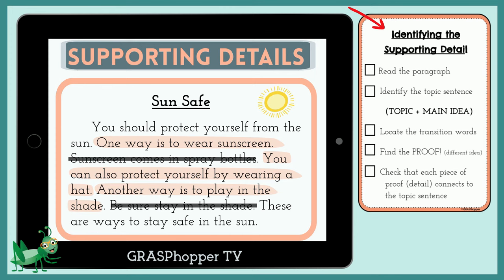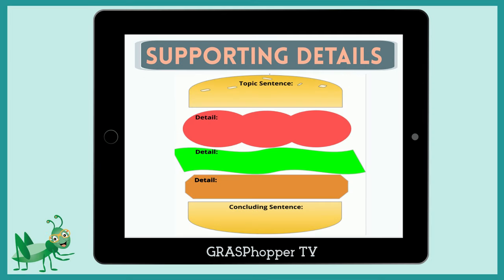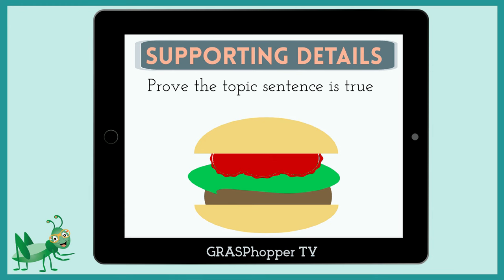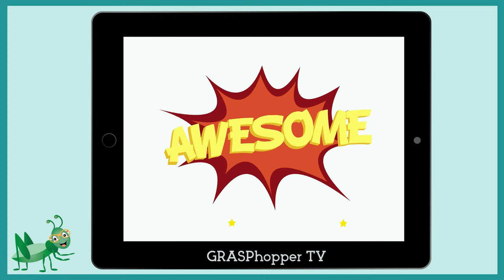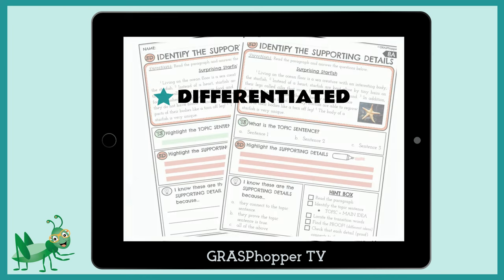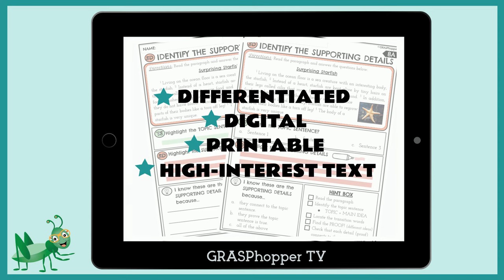Awesome job! In this Grass Popper teaching video, we learned all about supporting details and how their job is to prove the topic sentence is true. Remember, if a paragraph does not have supporting details, it'll fall apart — just like a burger that's missing the tomato, lettuce, and patty. You've completed the lesson for today. You are now a supporting details expert. To continue practicing, find this activity and more in the link below.